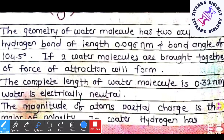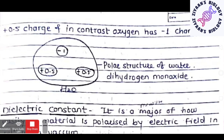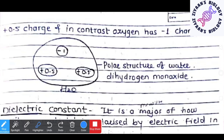Water is basically electrically neutral. The magnitude of partial charges is the key polarity — in the water molecule, hydrogen carries a +0.5 charge whereas oxygen carries a -1 charge. This is the polar structure of the water molecule, whose chemical name is dihydrogen monoxide.